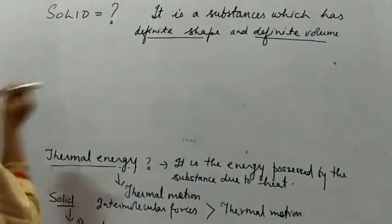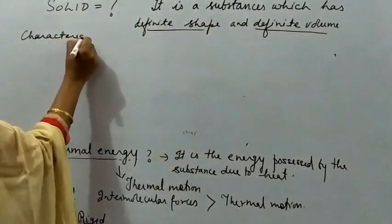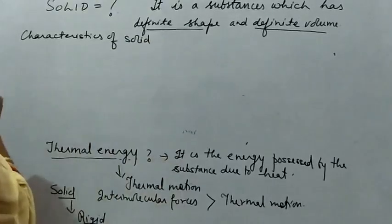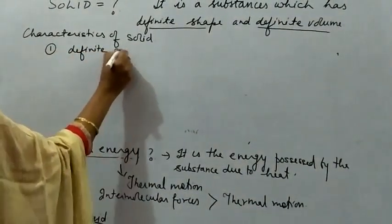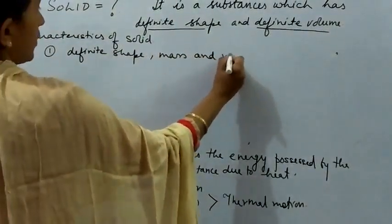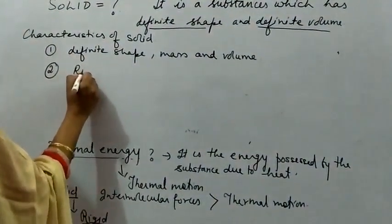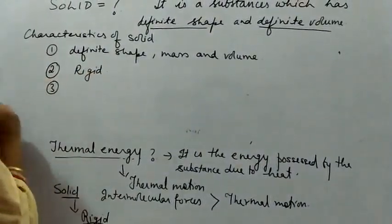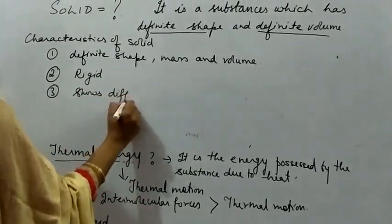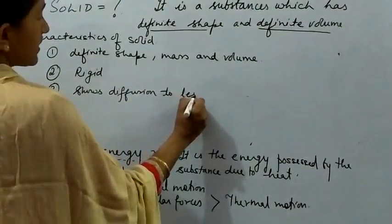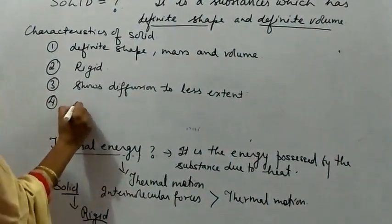Now, the characteristics of solid. After going through the definition and the arrangement, we will come to the characteristics of solid. What is the characteristic of solid? The first one is have definite shape, mass and volume. Second one is that they are rigid. Third is shows diffusion to less extent. If we compare it with the liquid or gases, they are almost incompressible.